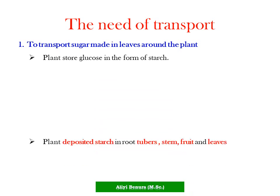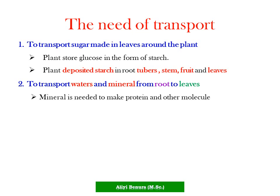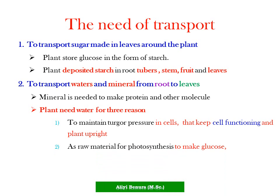The swollen part contains sugar that needs to be transported around the plant. Plants store glucose in the form of starch, and also deposit starch in root tubers, the stem, fruit, and leaves. Transport is also needed to move water and minerals from the root to the leaf. Minerals are needed to make protein and other molecules. Plants need water for three reasons: to maintain turgor pressure in cells, as a raw material for photosynthesis, and to transport minerals and food around the plant.